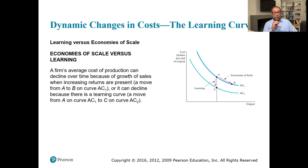It's important to distinguish learning curve effects from economies of scale. Producing more gives economies of scale, while repeated experience drives the learning curve. A firm's average cost of production can decline over time due to growth of sales when increasing returns are present — a move along curve AC1 — or it can decline due to a learning curve effect, a shift from AC1 down to AC2.